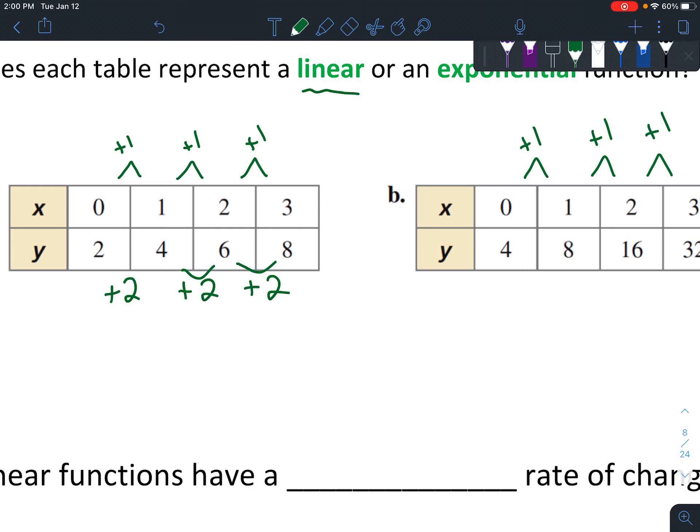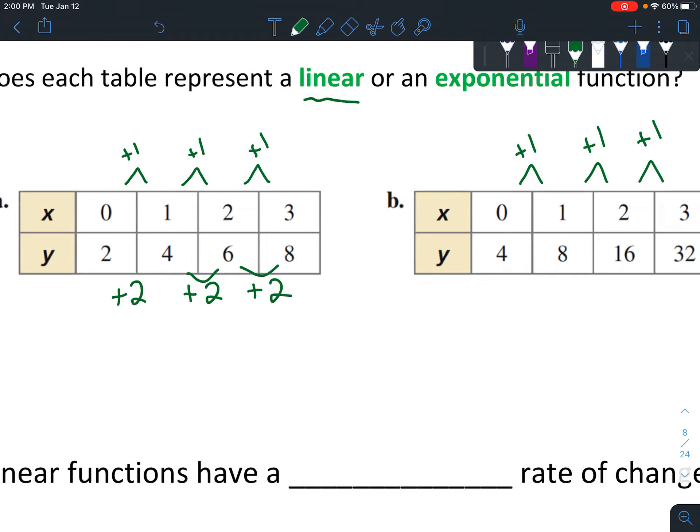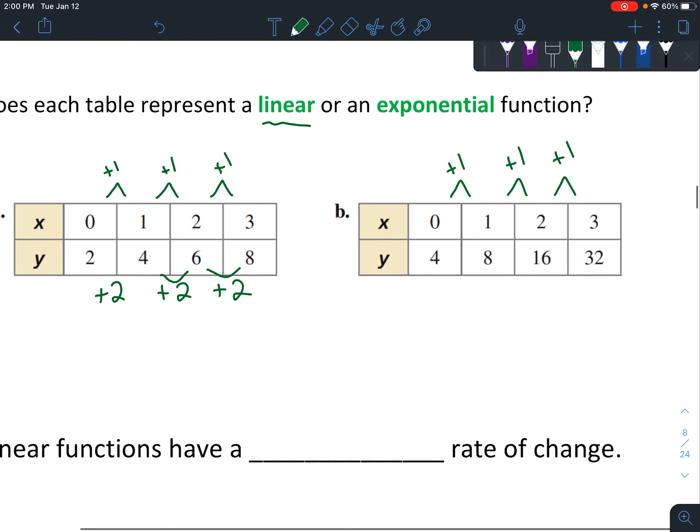So this one's linear, and that's because the amount that's changing is the same every time. Now the difference with an exponential is that, so this time you might think we're adding 4, but now we're adding 8, and now we're adding 16. And what we're actually doing is we're multiplying by 2.